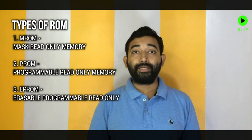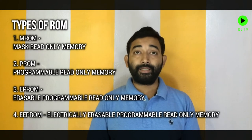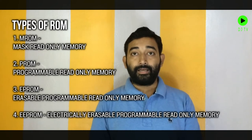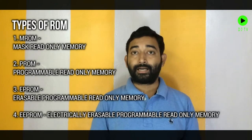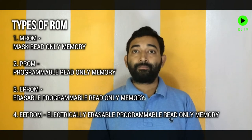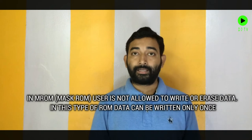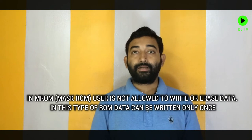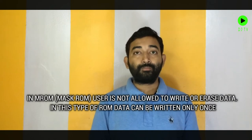ROM memory is inside the ROM: M-ROM, P-ROM, EP-ROM and EEP-ROM. M-ROM is called Mask ROM. This is the ROM that is built by the company.